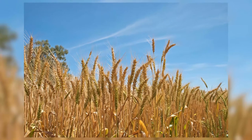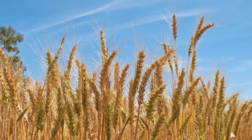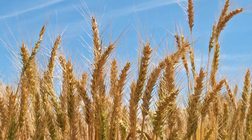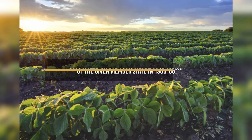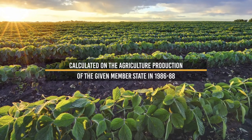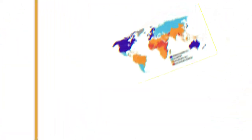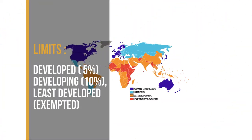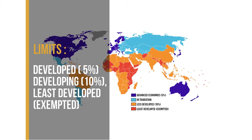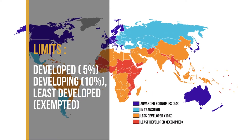Especially in the amber box, the minimal amounts of amber box subsidies permitted by WTO — the de minimis limits — are calculated on the agricultural production of the given member state on the basis of 1986–88. The limits are: for developed countries, 5%; for developing countries, 10%. Least developed countries are exempted.